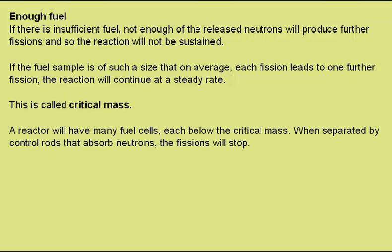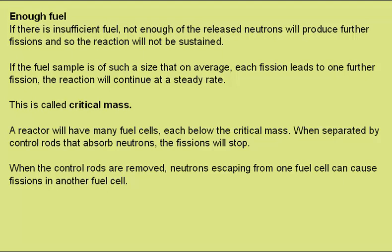A reactor will have many fuel cells, each individually below the critical mass. When they are separated by control rods that absorb neutrons, the fissions will stop. When the control rods are removed, neutrons escaping from one fuel cell can cause fissions in another fuel cell.